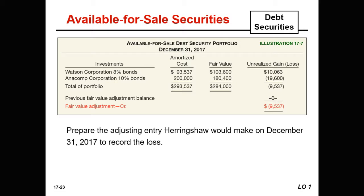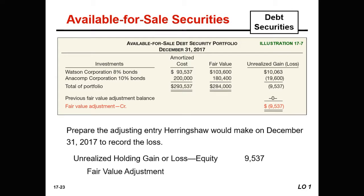The entry recorded on December 31st, 2017 to record the unrealized holding loss is a debit to the unrealized holding gain or loss equity account for $9,537 and a credit to the fair value adjustment of $9,537.